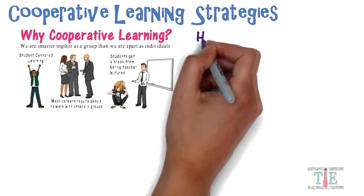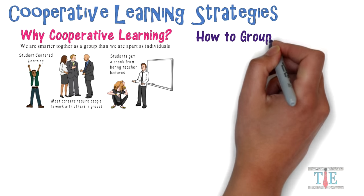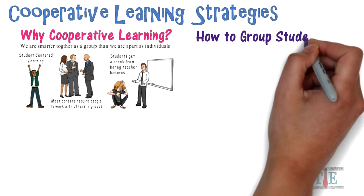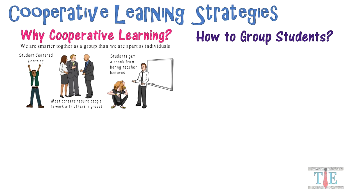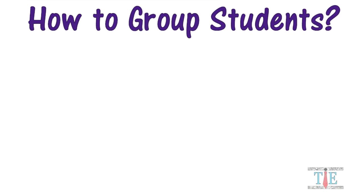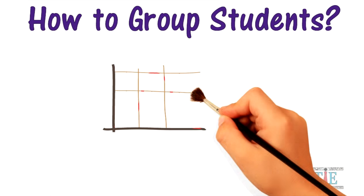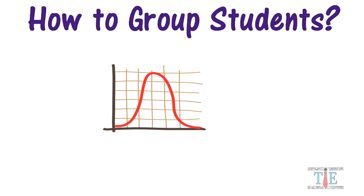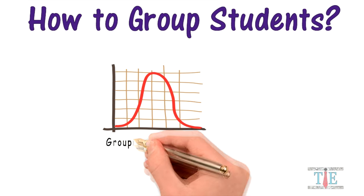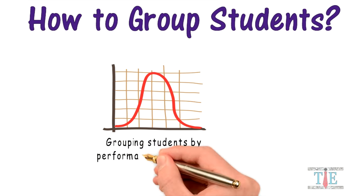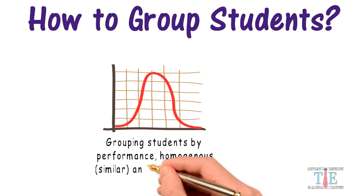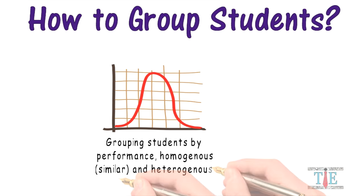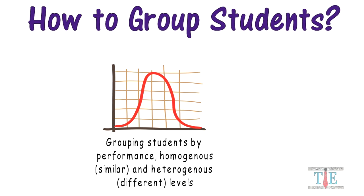A common question is how do we group students for cooperative learning? It is best to group students deliberately, and the first thing to consider when grouping students are their academic abilities and their test scores. Consider grouping students by performance level: homogeneous grouping for students with similar performance levels, and heterogeneous grouping for different performance levels.